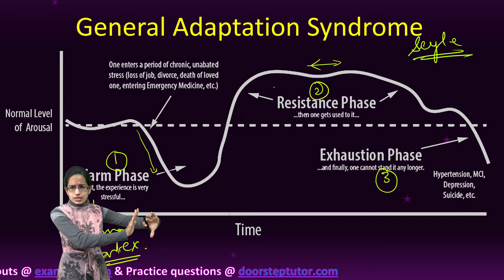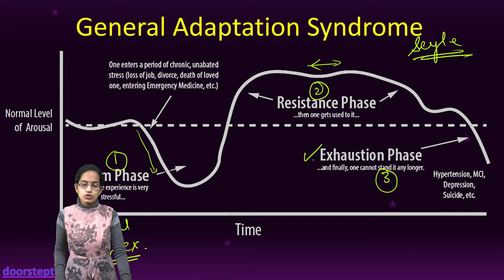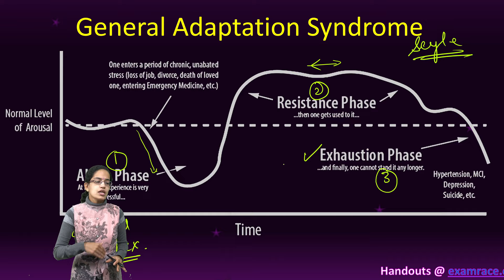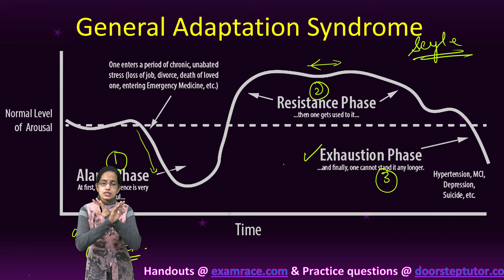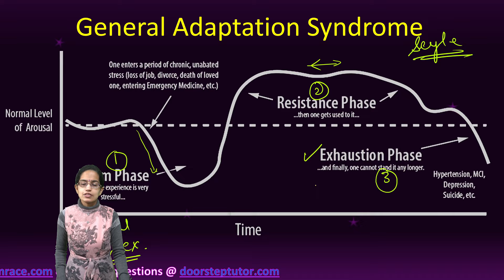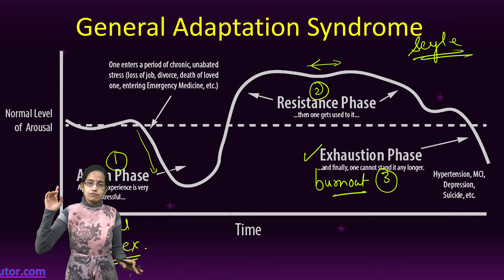Finally, is the phase of exhaustion. Exhaustion is a phase where there is continued exposure to stress — the same stress, additional stress — and a situation when a person is no longer able to bear the stress. A state of burnout, a state where there is a complete decline in the physiological, psychological, and emotional levels.